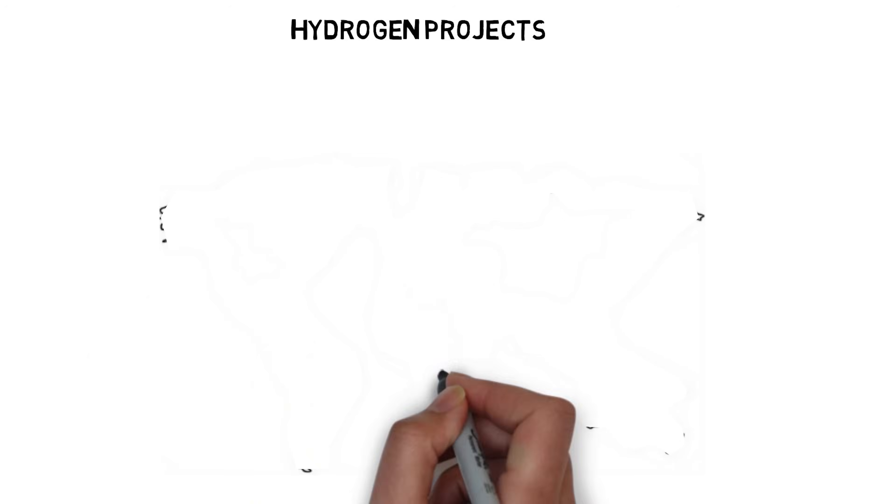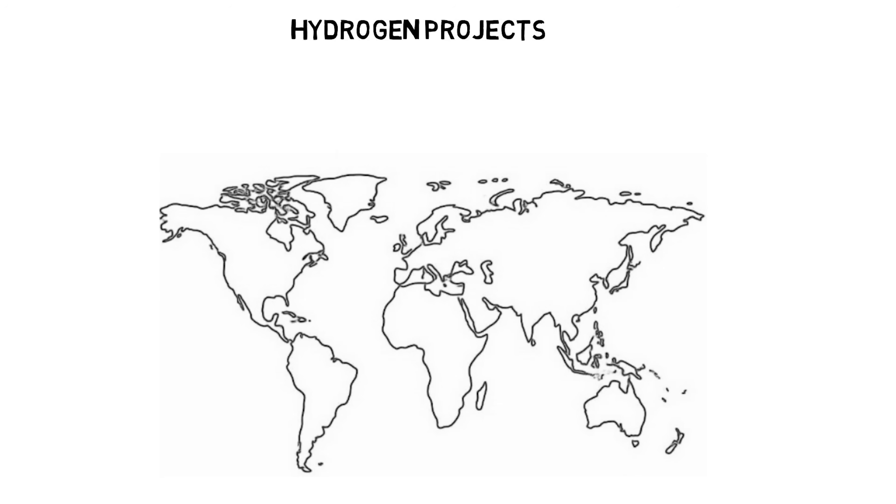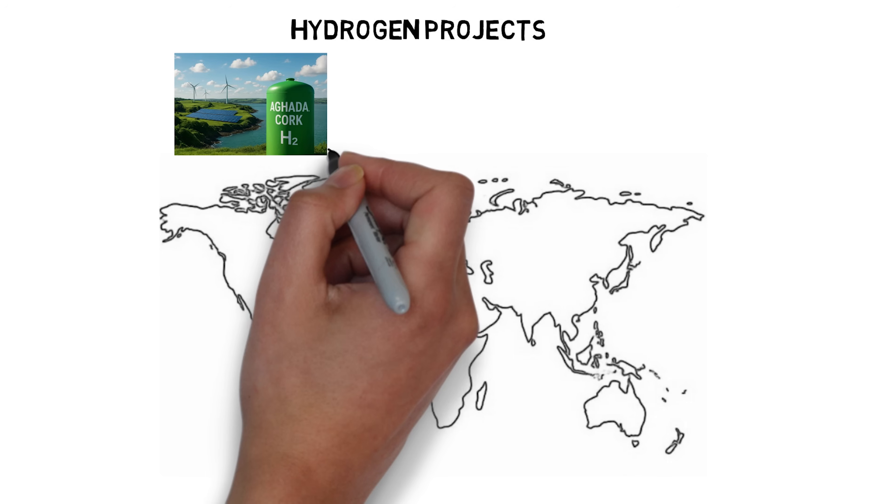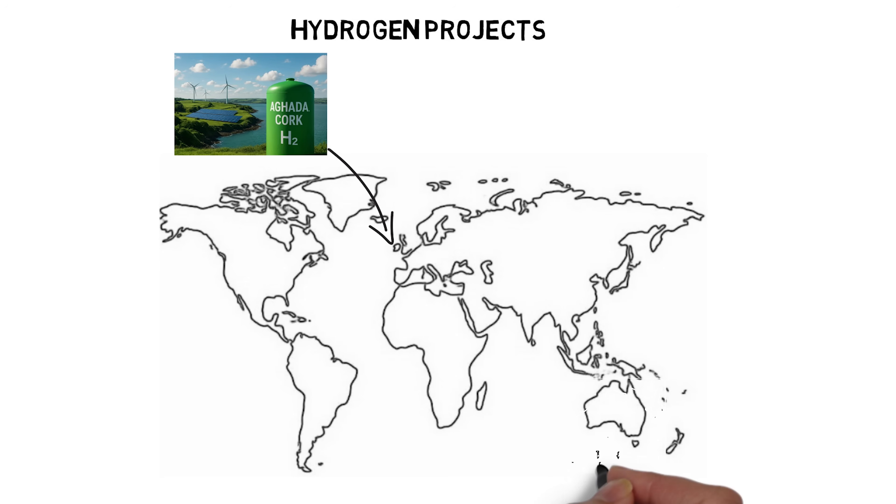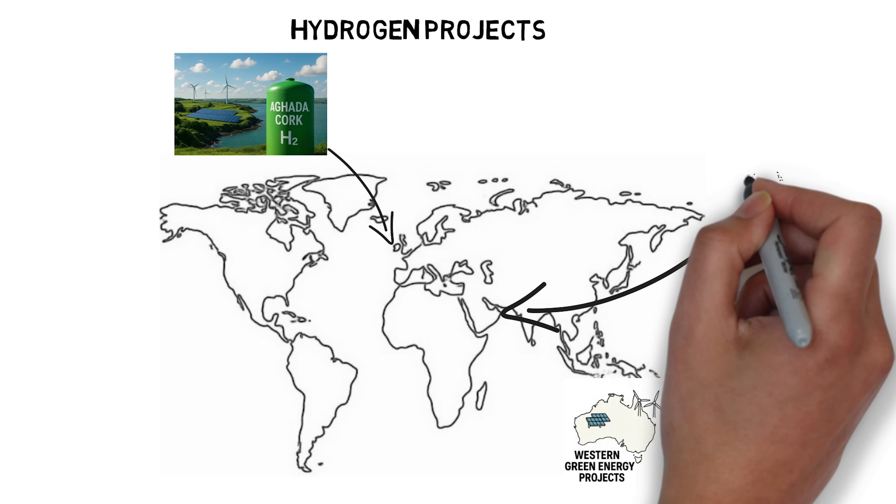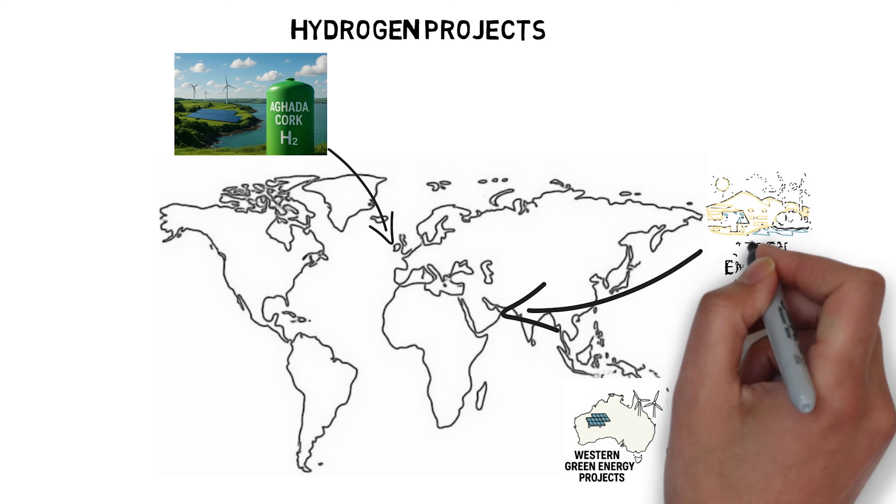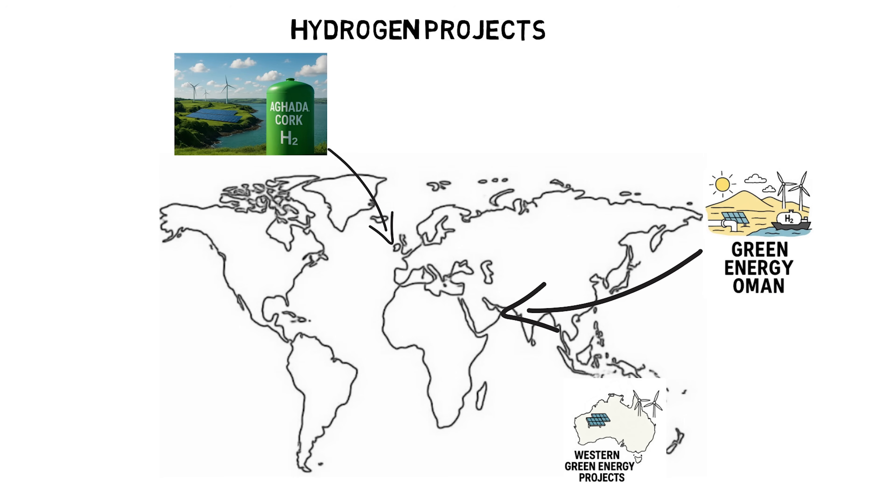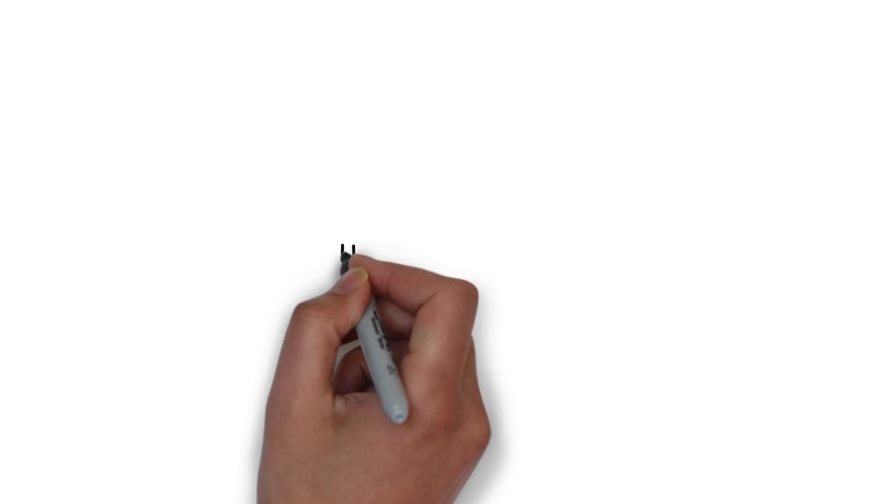In the global race for clean energy, green hydrogen is taking center stage. Ireland is exploring its potential as a natural gas alternative, with a flagship project in Agata, Cork, leading the way. Worldwide, massive initiatives are underway. Australia's Western Green Energy Hub spans 15,000 square kilometers, aiming to produce 3.5 million tons of hydrogen annually from 50 gigawatts of solar and wind. Meanwhile, the Green Energy Omen Project taps into 25 gigawatts of renewables to generate nearly 2 million tons of hydrogen each year. Green hydrogen isn't just a concept. It's becoming reality.